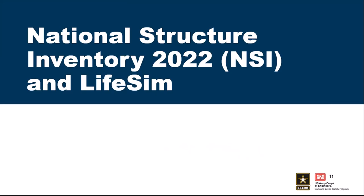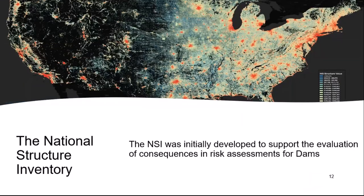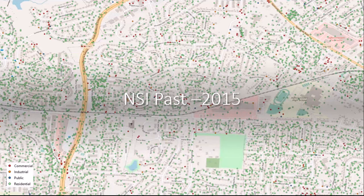The NSI — National Structure Inventory — was developed when the Corps started ramping up portfolio analyses. We had a lot of dams and levees to study and didn't have time to build custom inventories for each one. There's no time to drive around recording structure attributes in a windshield survey. We needed something we could take off the shelf to quickly screen our dams. We first started using Hazus data — a FEMA product with census block level information — distributing structures across the census block area. A 2015 version limited placement to developed areas within census blocks, though results were still somewhat scattered.